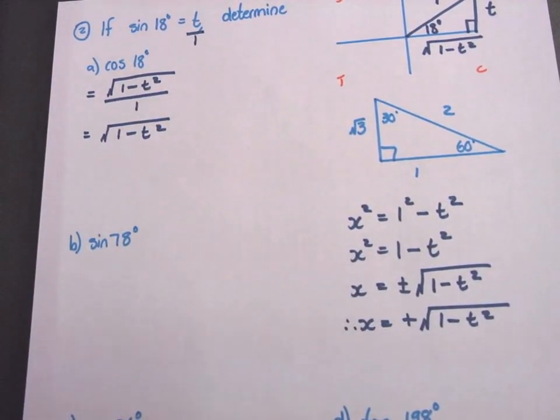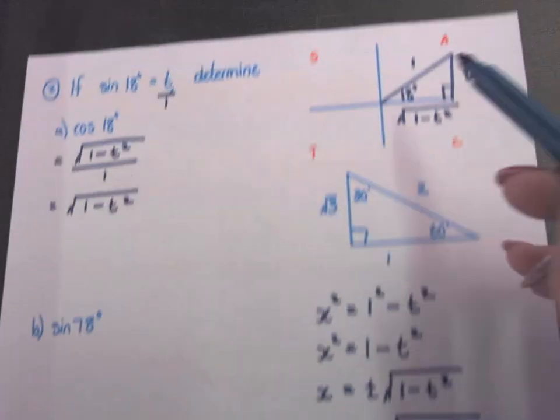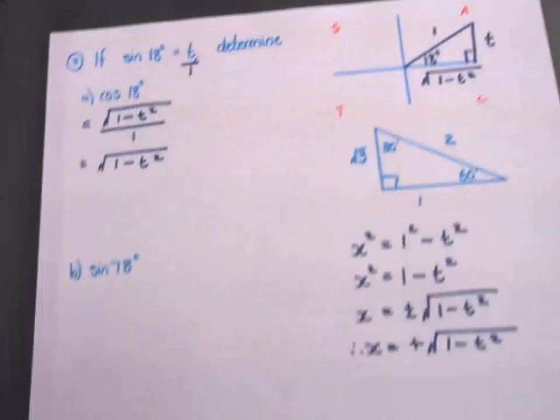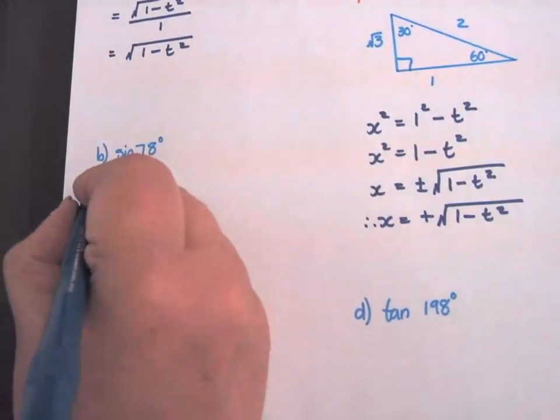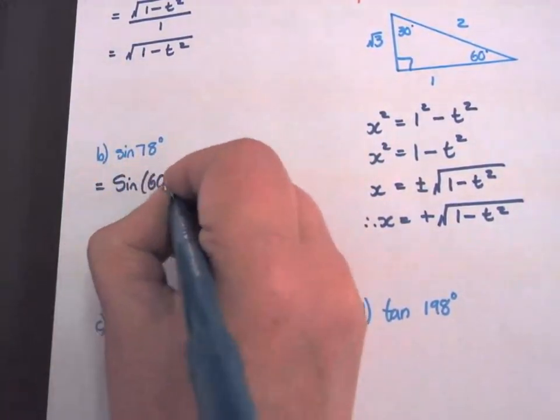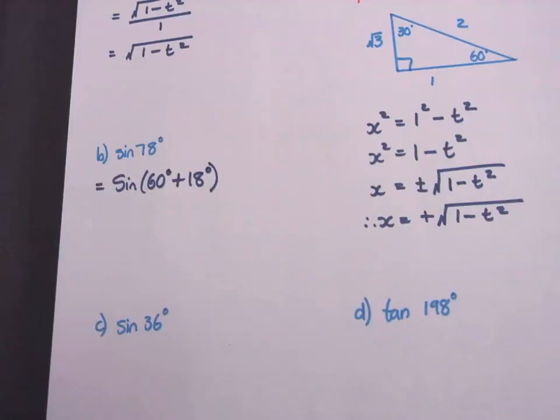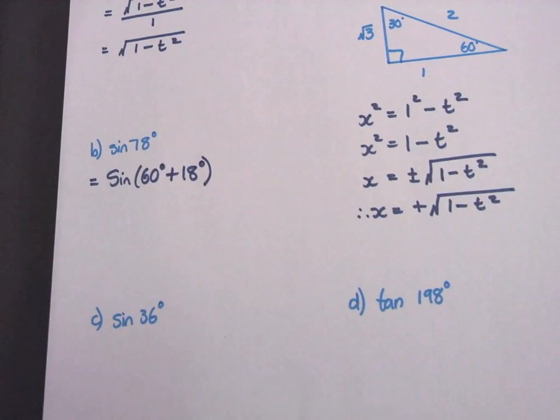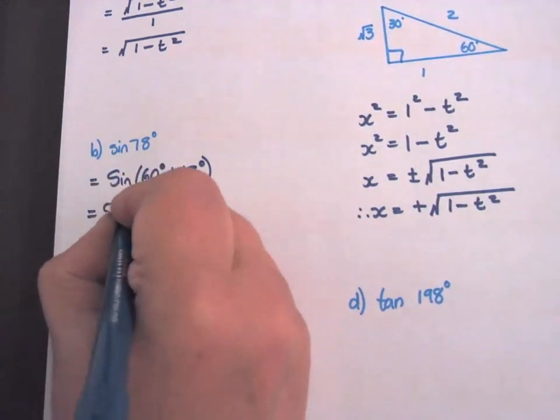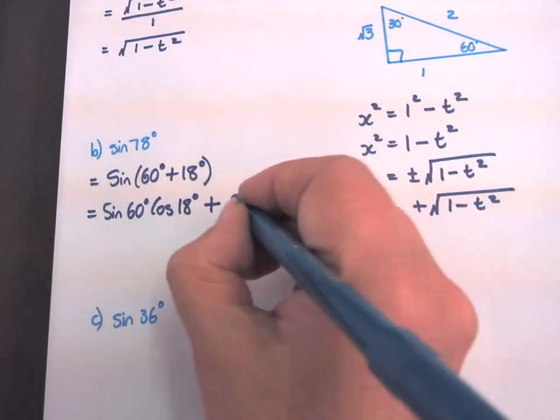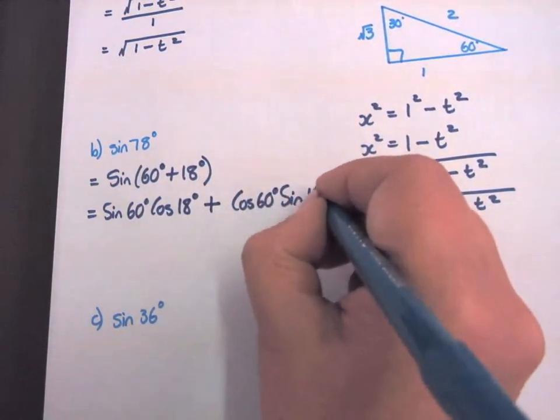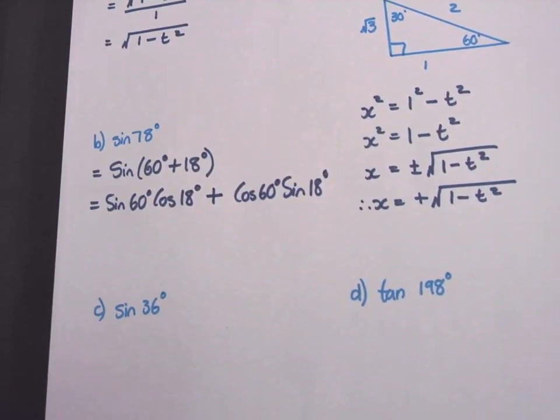Sine 78. We need an 18 degree in the sum because we have a triangle with 18 degrees. So how can I transform this 78 including an 18 degrees? 60 plus 18. So I make it a compound angle: sine of 60 plus 18. And what is the formula for sine compound angles? Sine cos. Sine 60 cos 18 same sign plus cos 60 sine 18.